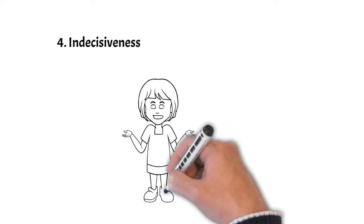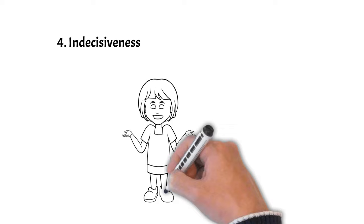Number 4: Indecisiveness. Their need to analyze all potential outcomes can make them indecisive, which could be irritating for those who prefer to take quick action.